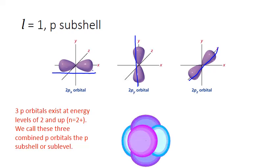All three of these orbitals coexist, and different electrons can be found in all three of them at the same time in one energy level in one atom. The P shape can be found at energy levels of 2 and higher, and at each of these energy levels, all three overlap and coexist — we call them the P subshell or sublevel. To designate which of these three orbitals a particular electron can be found in, we introduce a third quantum number to designate orientation.